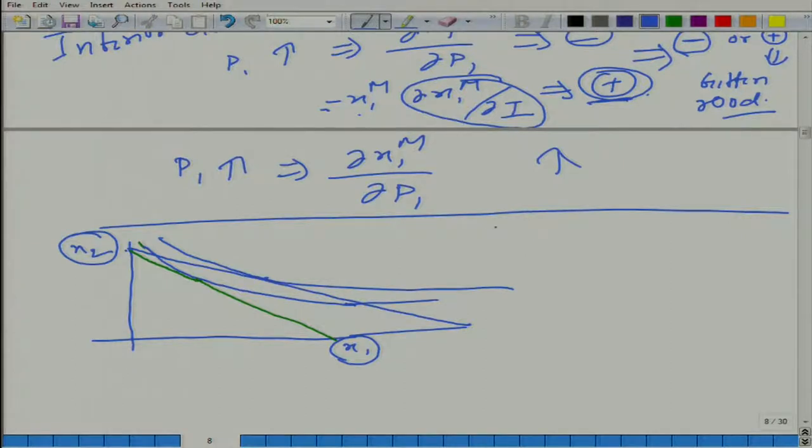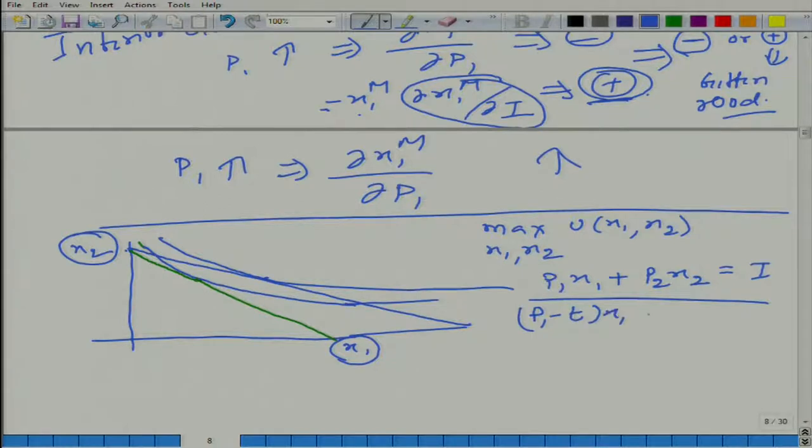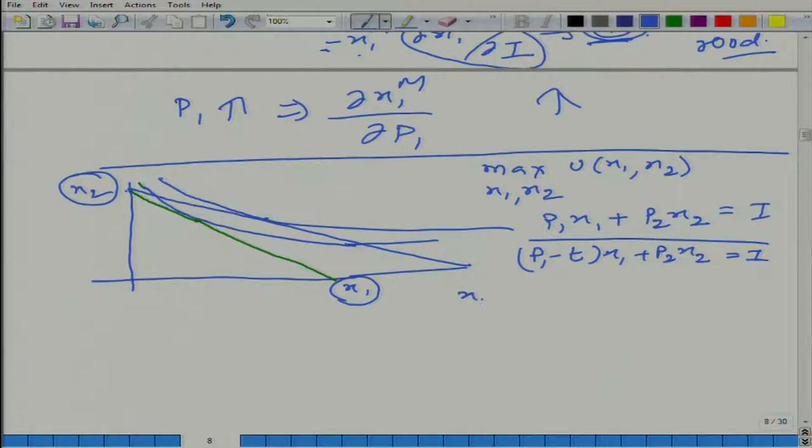In this case, the utility level that consumer can achieve will go up. Let us say here: maximize u(x₁, x₂) such that p₁x₁ + p₂x₂ = I. Now, if government gives subsidy on good 1, and it is a specific subsidy, what will happen to the budget line equation?